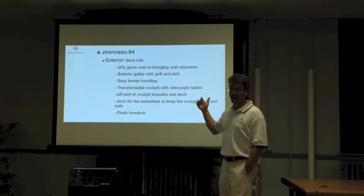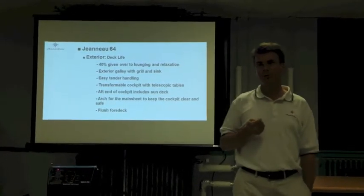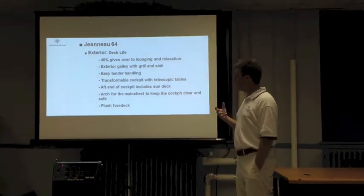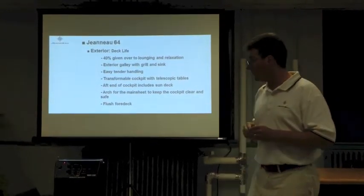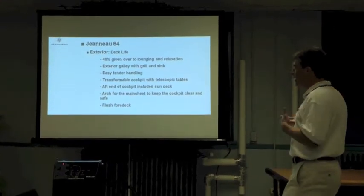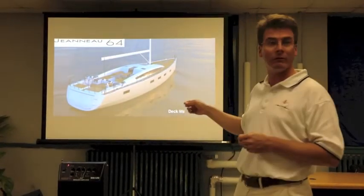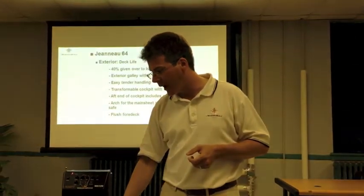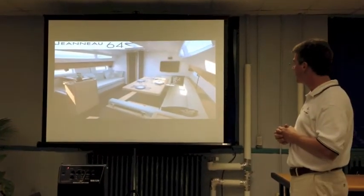Exterior options include deli, grill, sink integrated into the boat. We have a tender handling system for the garage that will allow us to take up to a 285 Williams jet tender, items that can weigh up to 500 or 600 pounds. The transformable cockpit table can be transformed back and forth. The aft end has the sun deck like we have on the 57. We have a mainsheet arch that we can have or not have, and a flushed foredeck area for the front end of the boat, which gives it that super yacht look.